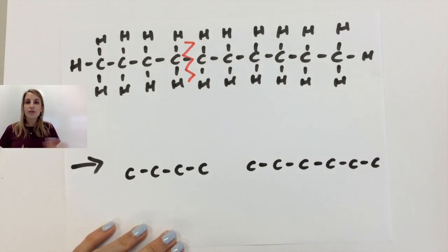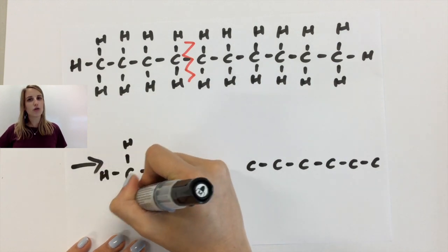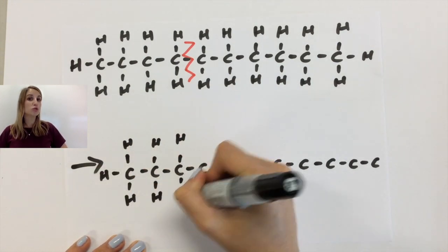So I've got a molecule with four carbons being produced and a molecule with six carbons being produced. Now I'm going to choose for the one with four carbons to become my alkane so if we draw the hydrogens around that you can see it becomes butane.